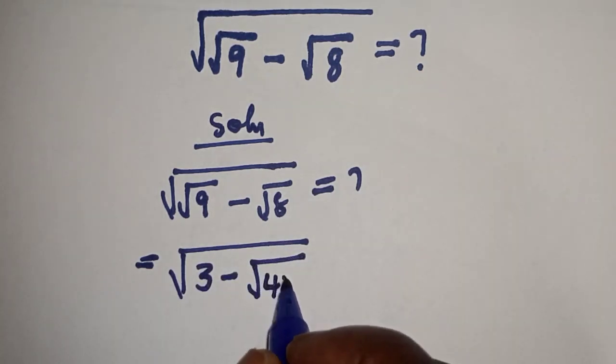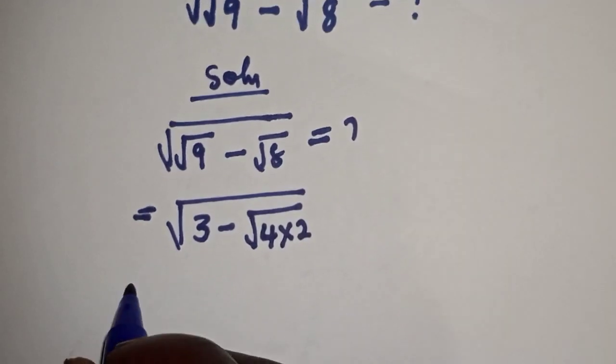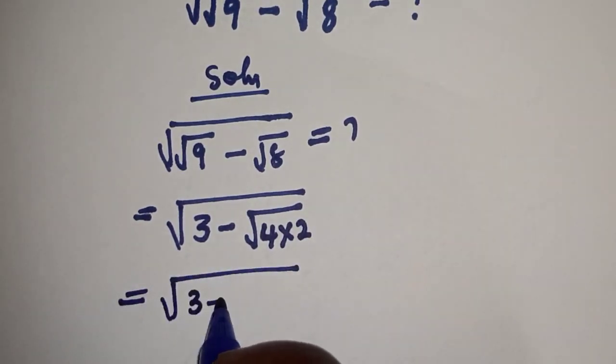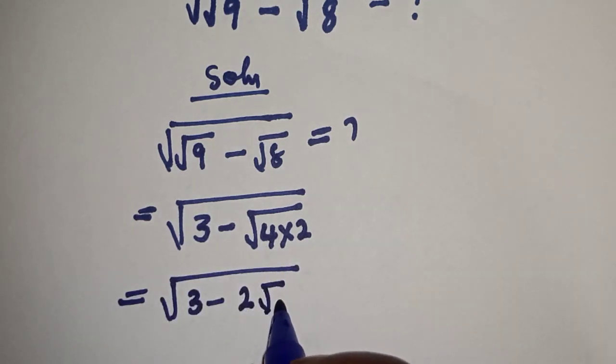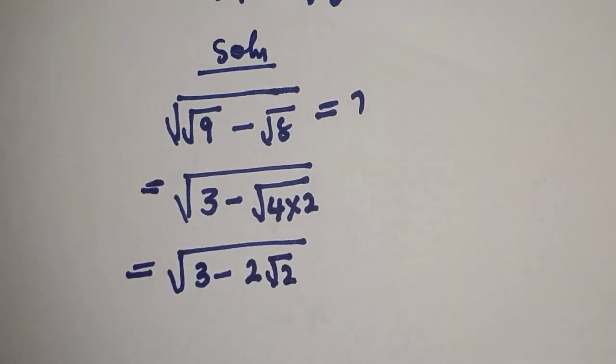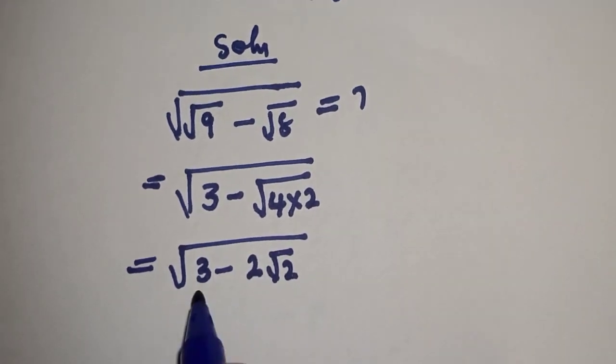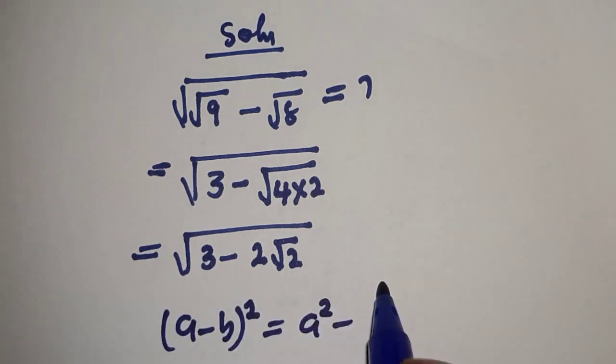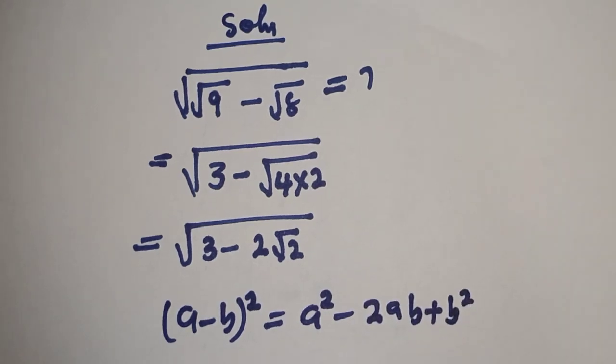This equals √(3 - √4 is 2√2). Then note that if you have (a-b)², this is equal to a² - 2ab + b².